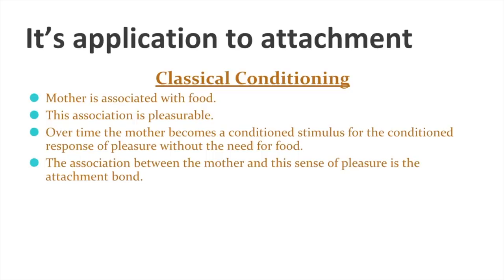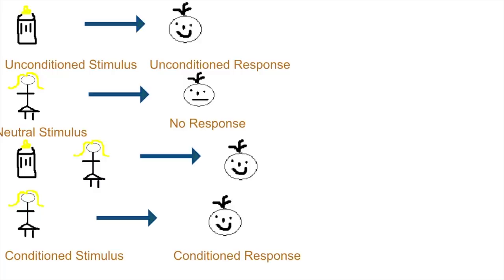You have an unconditioned stimulus leading to an unconditioned response, and a neutral stimulus leading to no response. Those two are paired together during learning until you get a conditioned stimulus leading to a conditioned response. So: to begin with, the mother — day one, when the baby's born — is a neutral stimulus. The baby wants food; food is the unconditioned stimulus and pleasure at having food is the unconditioned response. The mother is the one giving the food, so the neutral stimulus is paired with the unconditioned stimulus until eventually the baby associates being around the mother with pleasure, and the mother becomes the conditioned stimulus. The researchers here were Dollard and Miller.